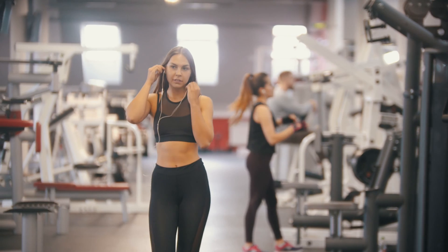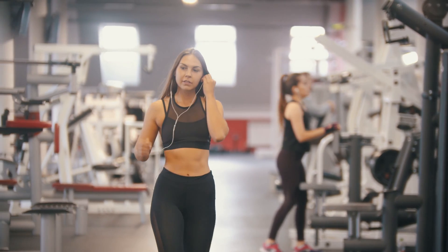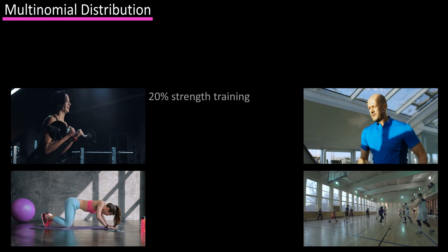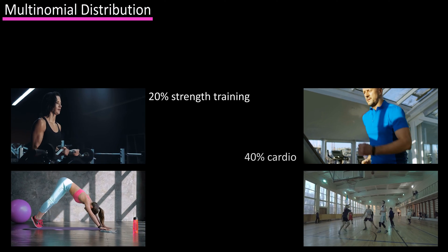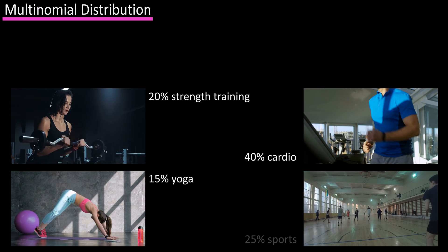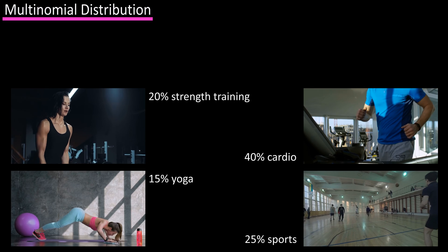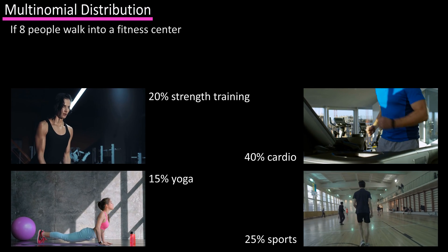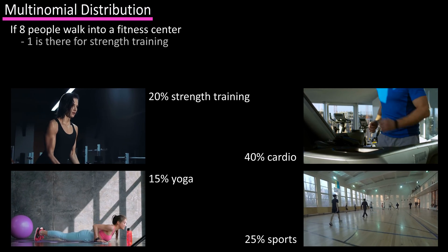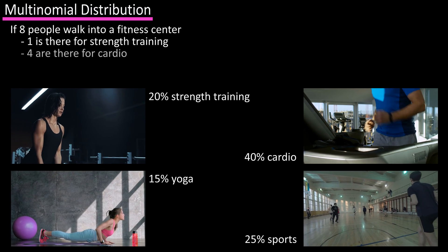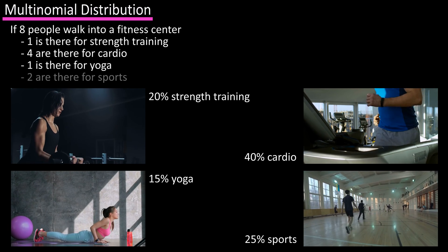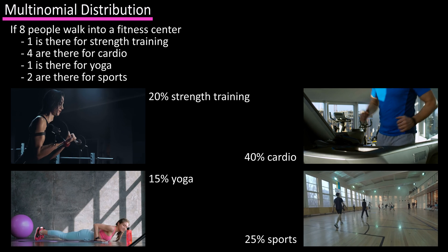Let's look at an example. Let's say you gathered data about people going to a fitness center and found that 20% were doing strength training, 40% were doing cardio, 15% were doing yoga, and 25% were playing a sport. If eight people walk into the fitness center, what is the probability that one of them is there to do strength training, four of them are there to do cardio, one of them is there to do yoga, and two of them are there to play a sport?